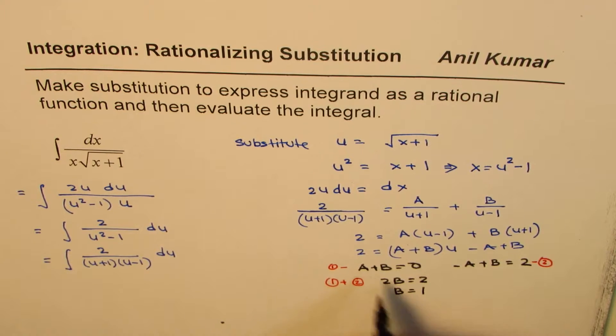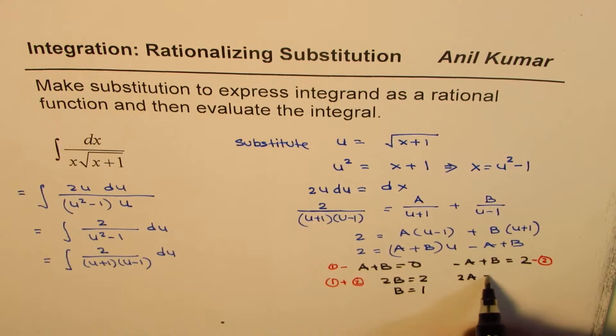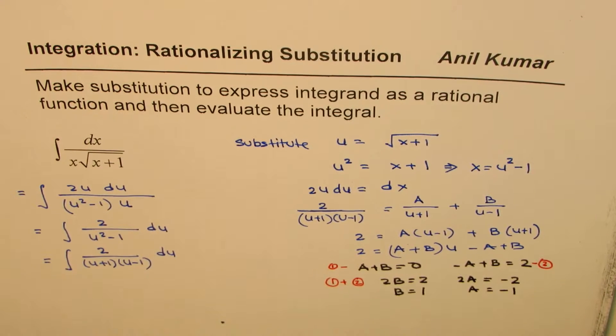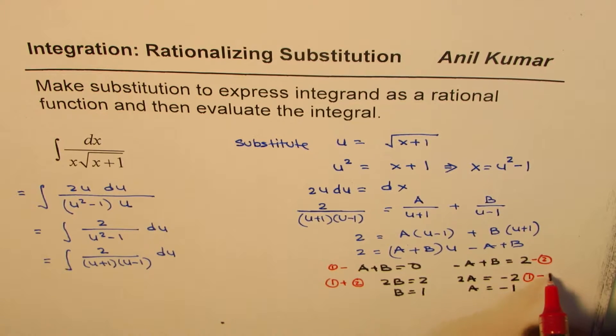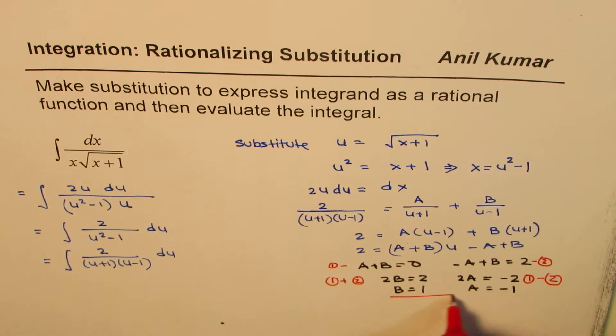And if I subtract then I get 2a equals to minus 2 or a equals to minus 1. So this is what I get when I do 1 minus 2. So I get a and b values.